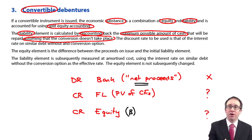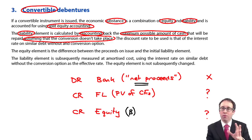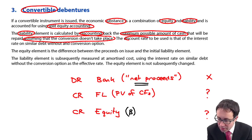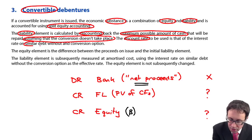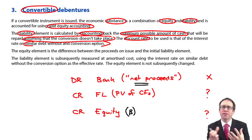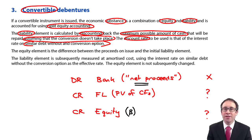The cash flows will be the coupon rate of interest and the amount paid on redemption, which is just the par value of the debt — redemption at par, no premium. For the discounting back of the coupon interest and redemption payment, we use a discount rate that is effectively the market rate of interest — technically, the rate on similar debt without the conversion option. That is what you would be paying if you borrowed the same amount from your bank on the open market.